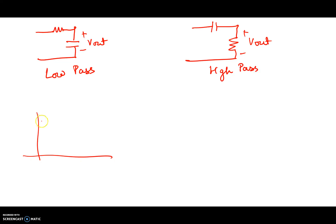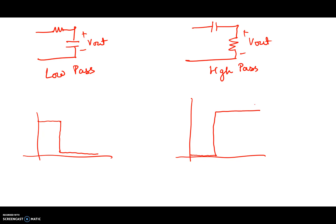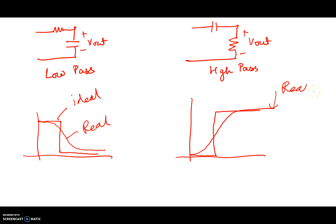Ideally, a low-pass filter magnitude would pass all low frequencies up to the cutoff frequency and then abruptly drop off. Similarly, an ideal high-pass filter would block all frequencies up to the cutoff and then abruptly allow everything else to pass. But in real life, the response is more rounded — that's the real response, while the abrupt version is the ideal. In our high-pass filter case, we see the same: the real response is more S-shaped, while the ideal is abrupt. Looking at voltage across the resistor versus across the capacitor for the same circuit can give you either a low-pass or a high-pass filter.